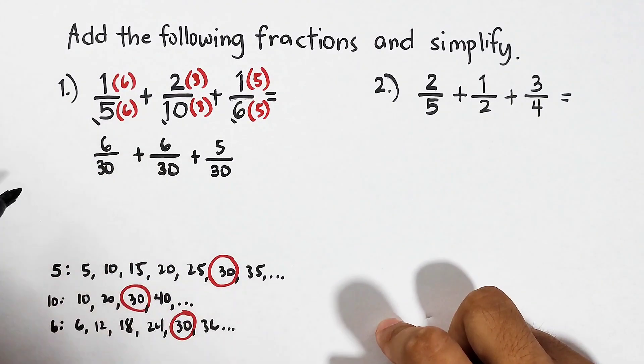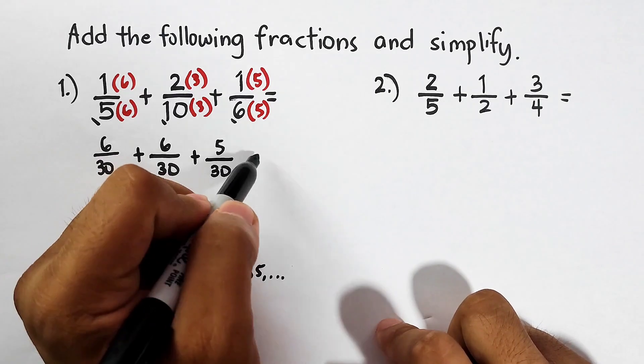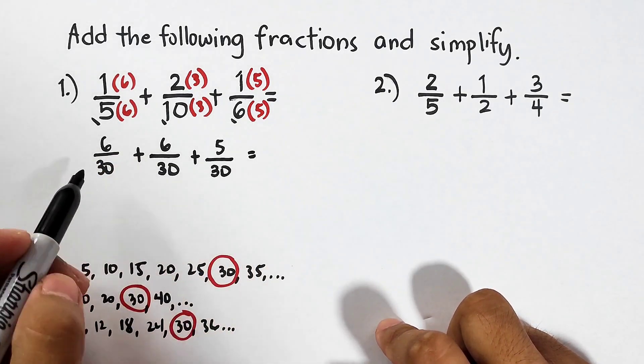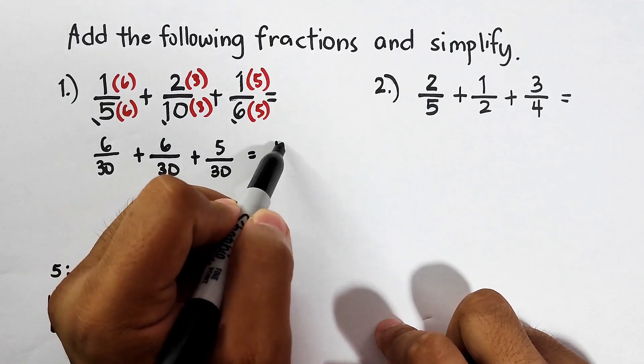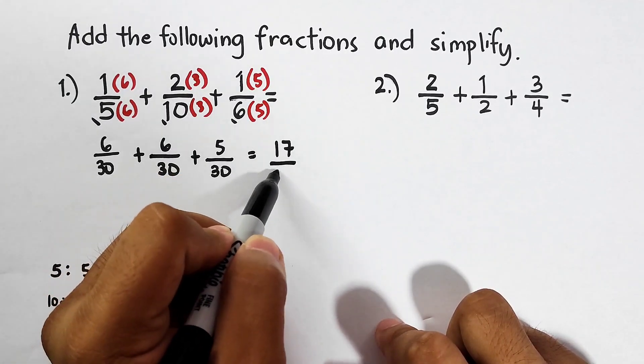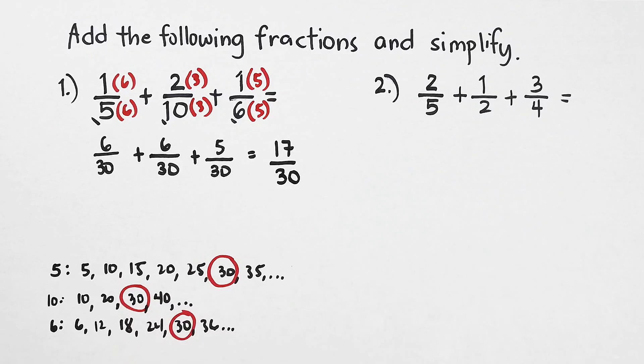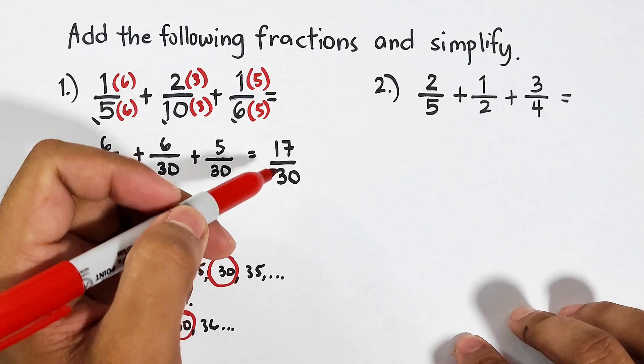Here we have plus 5 over 30. What's next is that we will add them: 6 plus 6 is 12, plus 5 is 17 over 30.